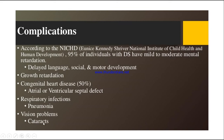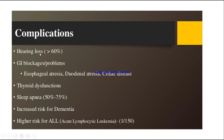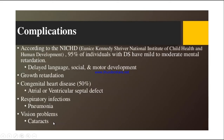More than 60% of children will have hearing loss. Gastrointestinal problems include esophageal atresia, duodenal atresia, or celiac disease. There will be thyroid dysfunction, sleep apnea in 50 to 75% of cases, increased risk for dementia, and higher risk for acute lymphocytic leukemia.